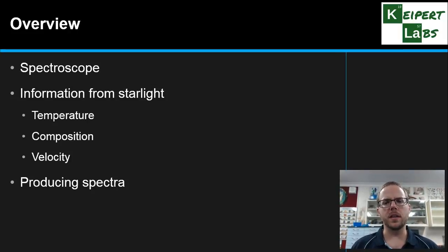and also its velocity, thinking about stars as moving objects in the universe. Then we'll look at how a spectroscope can produce a spectrum that we can analyze and interpret.